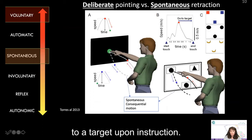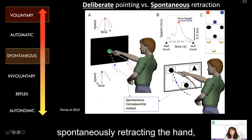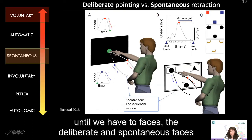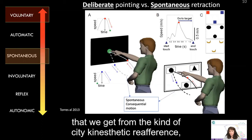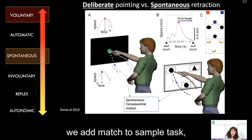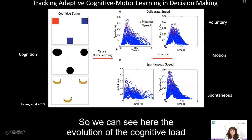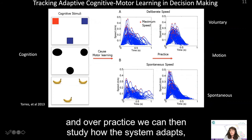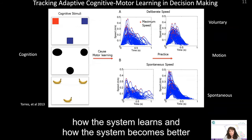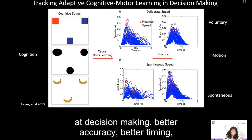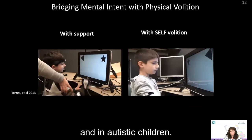An example experimental assay in autism is a simple pointing paradigm — bringing the hand to the target upon instruction and then retracting. We have two phases contributing differently to the kinesthetic feedback. Elaborating on this paradigm, we add match-to-sample tasks and a layer of decision-making with different levels of cognitive load that influence emotions. We can see the evolution of cognitive load that causes motor learning and adaptation. Over practice, we can study how the system adapts, learns, and becomes better at decision-making, better accuracy, better timing — both in neurotypical and in autistic children.